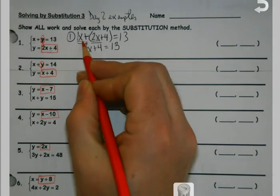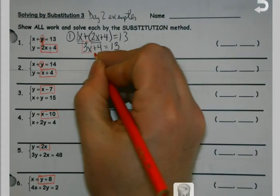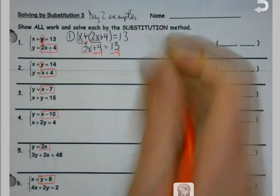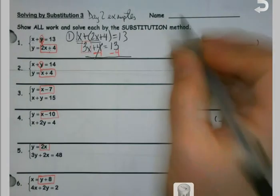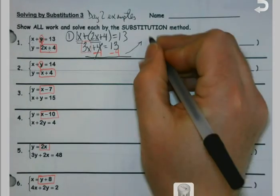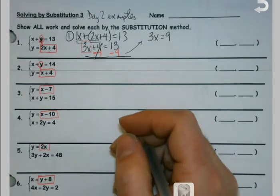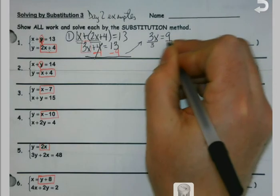And now it's just a regular two-step equation. My whole idea is to get my x by itself. So I can go ahead, I can minus my 4. I'm getting a little tight on room here, so I'm going to come up here. 13 minus 4 is 9.